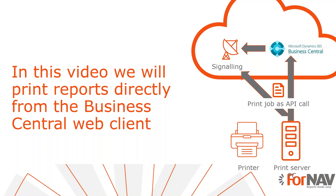When service print is selected, the print job is placed in a print queue in Business Central. This means the print job is stored in a table in the Business Central database — it is not sent to an external service. When a print job is ready in the print queue, it is picked up by a Windows service running on a PC or server on your network. The service communicates with the print queue using OData API via HTTPS.